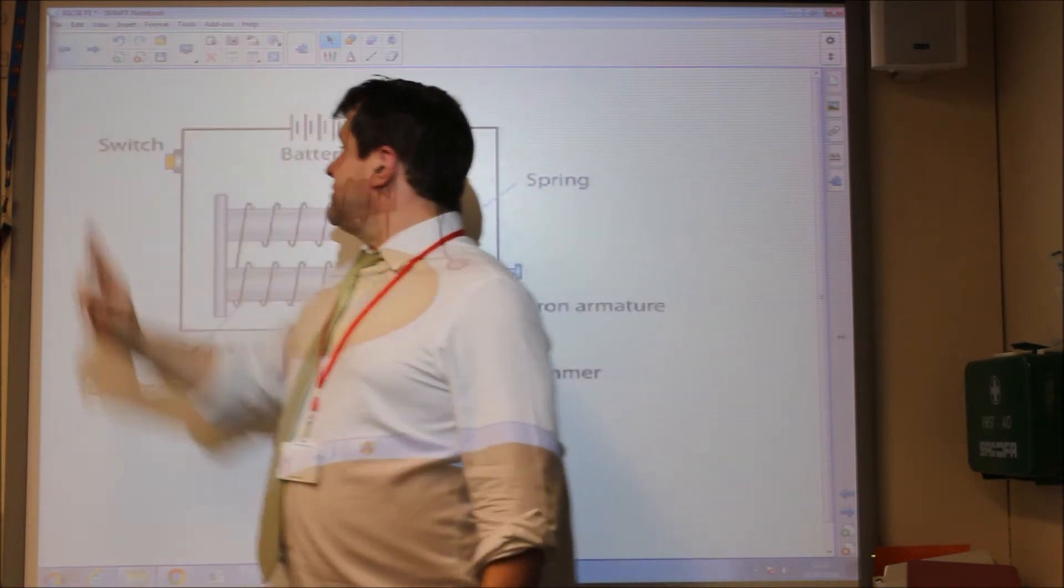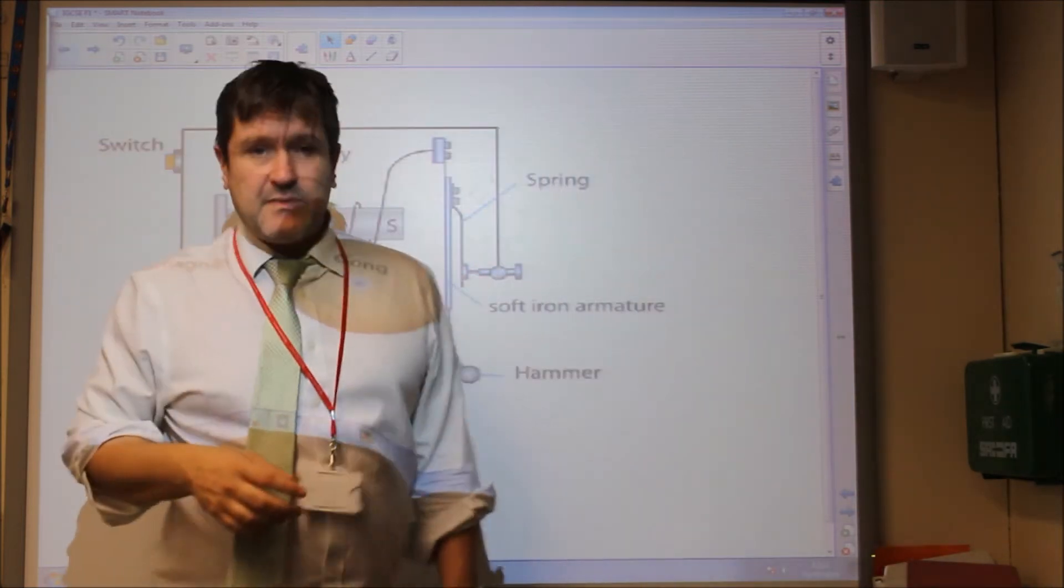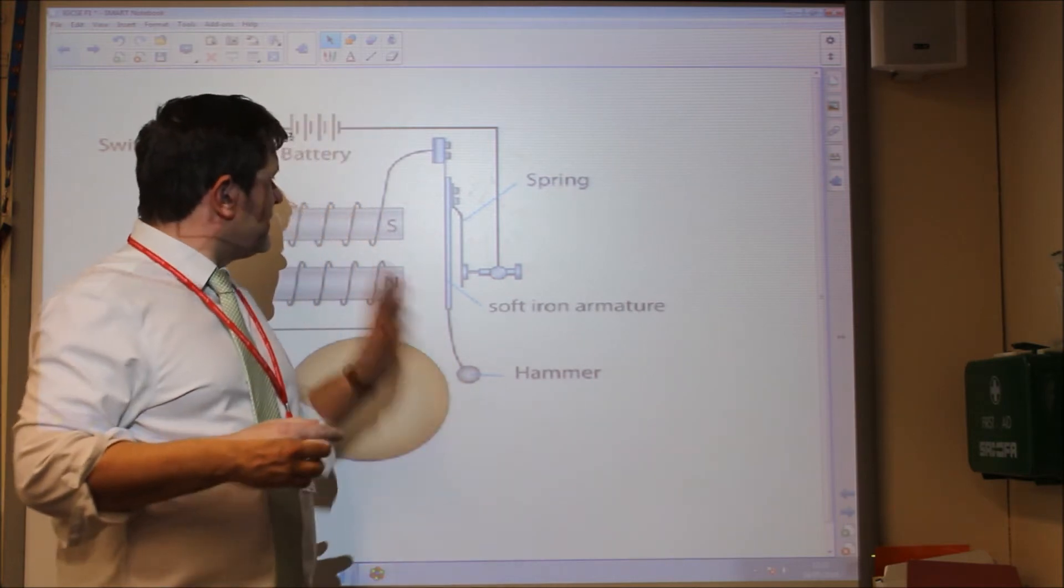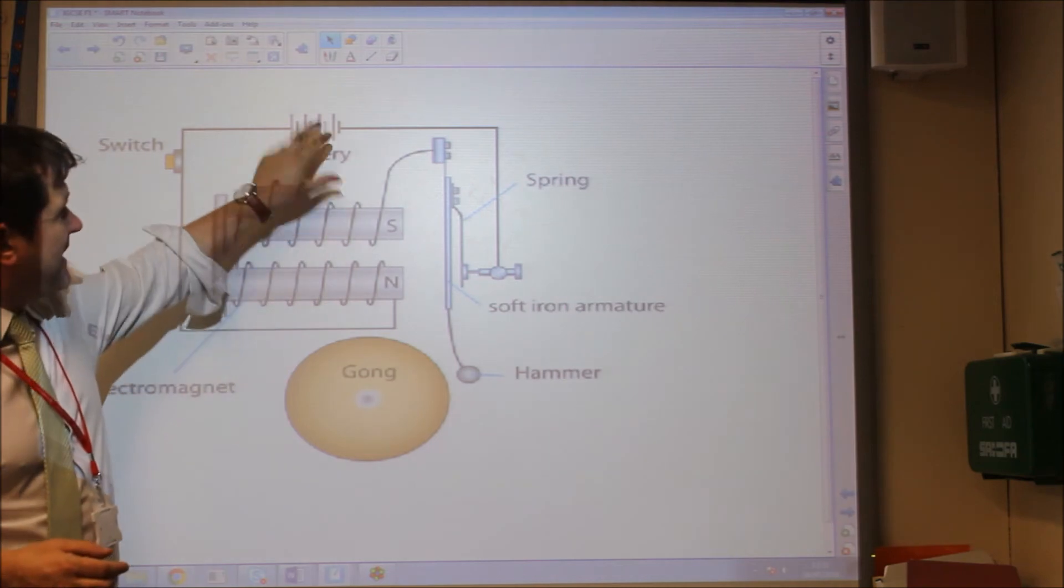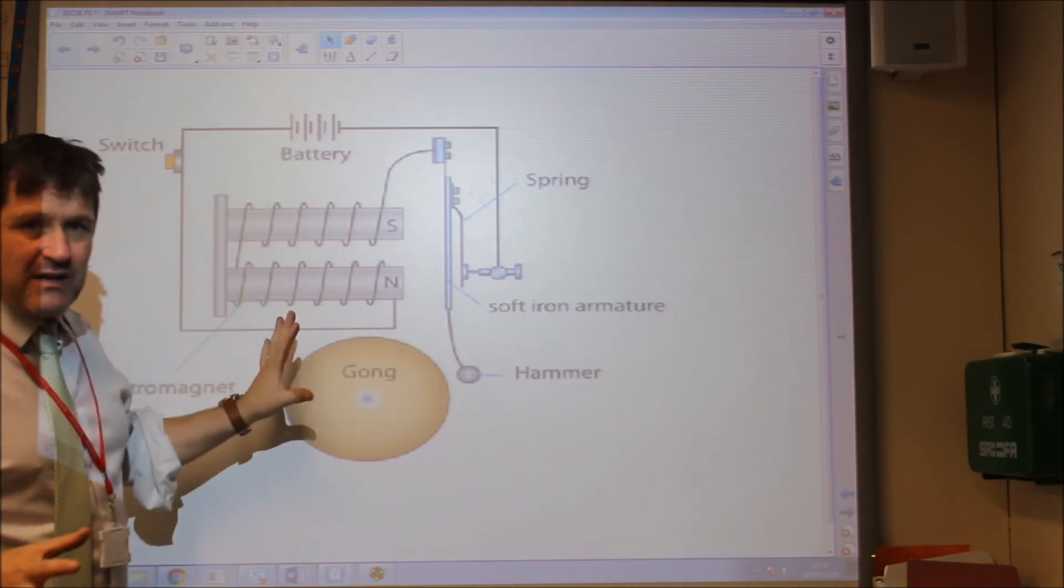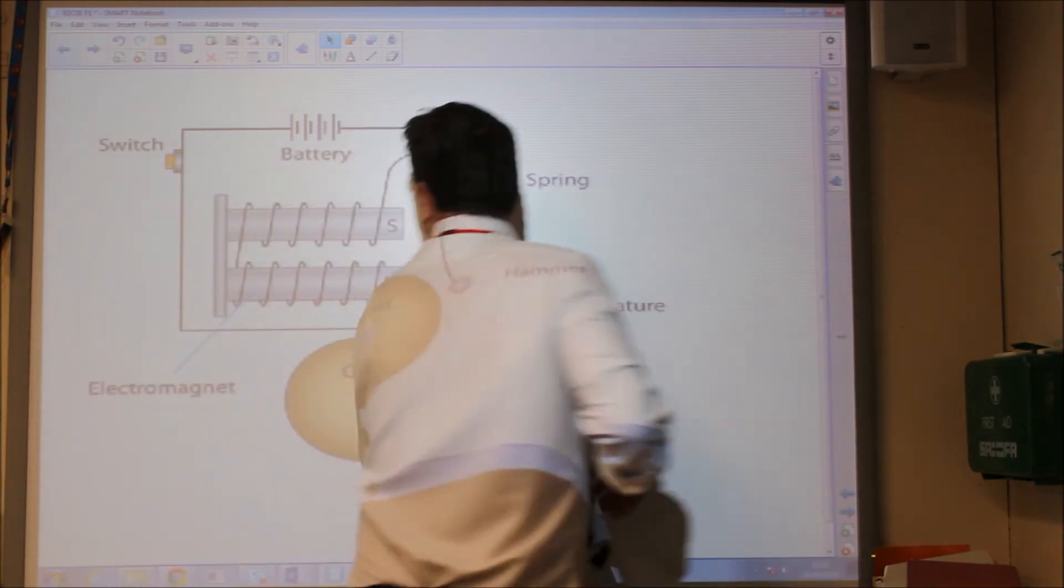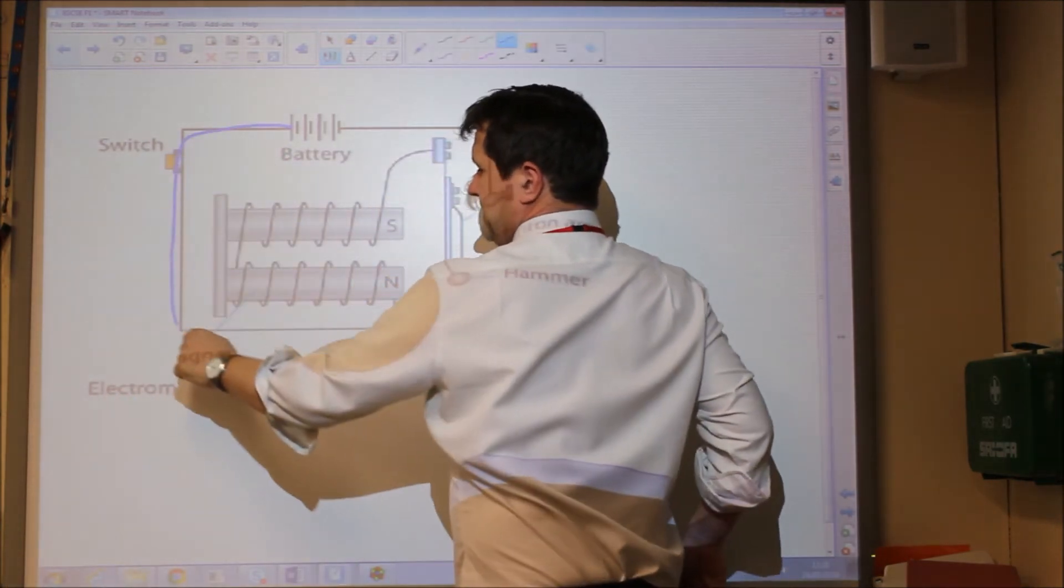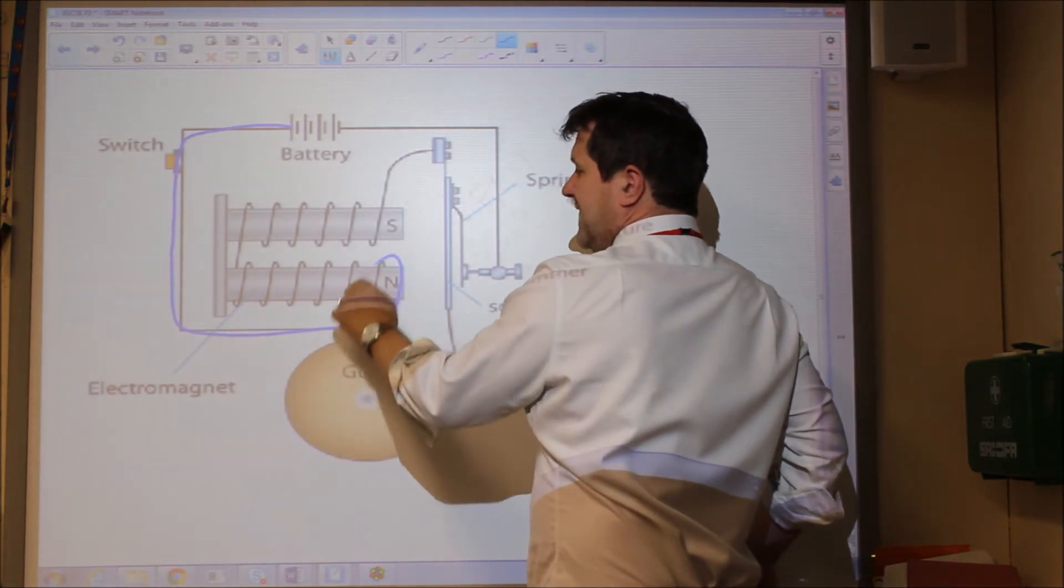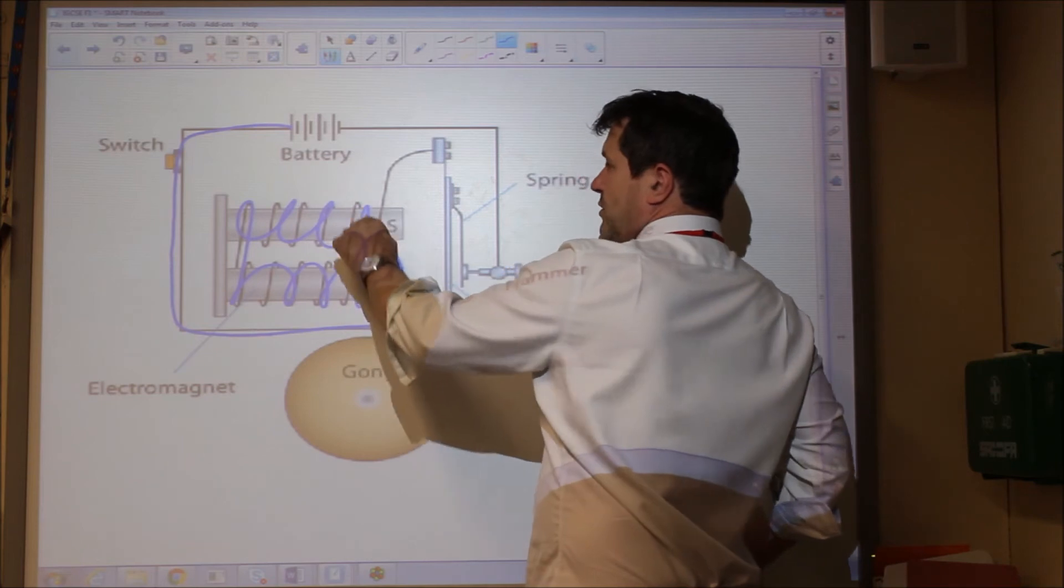So an example of a use of this would be the electric bell. Now, the electric bell, if you look at the electric bell, we've got a switch here and a battery. And how the electric bell works is this. When the switch is pressed, the current flows from the battery and it flows around these iron cores.